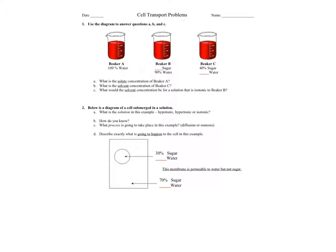Using the diagram to answer questions A, B, and C: What is the solid concentration of beaker A? It's zero percent. Why is it zero percent? Because it's a hundred percent water — sometimes a hundred percent means it can't be anything else.